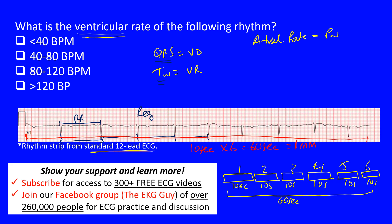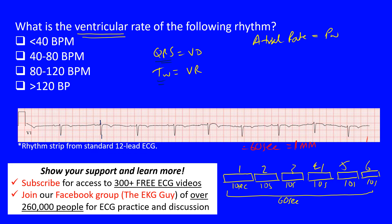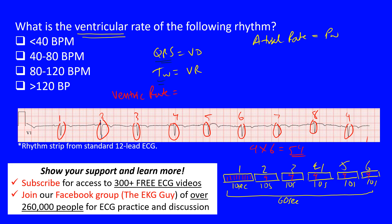Now we count the QRS complexes going across. Counting: one, two, three, four, five, six, seven, eight, nine. We have nine QRS complexes. Nine times six equals 54 beats per minute. Imagine nine complexes on each of six strips — that's where the 54 comes from. So one estimate of the ventricular rate is 54 beats per minute.